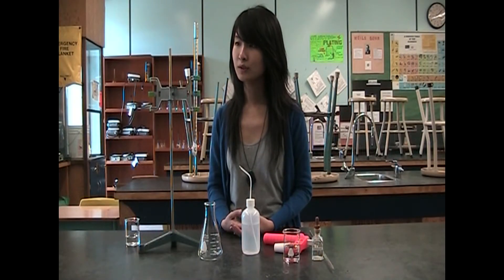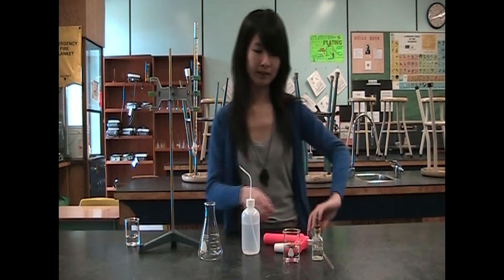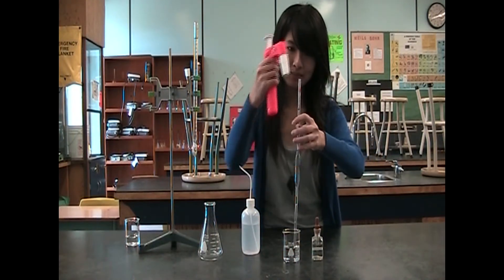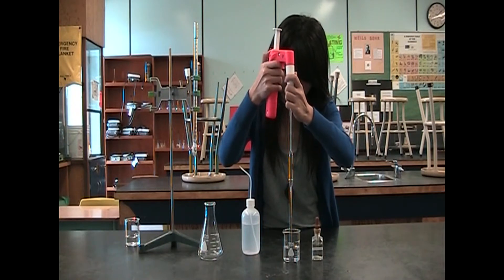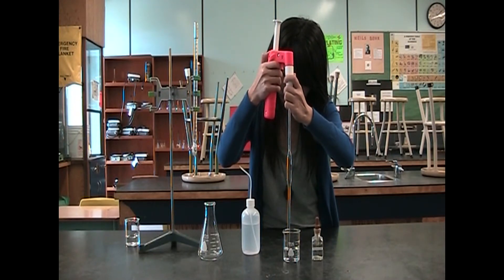Then you record the initial volume of sodium hydroxide. After that, you measure 10 ml of hydrochloric acid and put it in the flask.